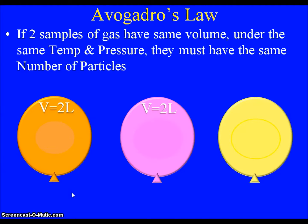The relationship with the number of particles was established by a guy by the name of Avogadro. You'll later recognize a very important number he's associated with: 6.02 times 10 to the 23rd. But going back to gases, Avogadro's law states that if two samples of gas have the same volume under the same conditions — same temperature and pressure — then they must have the same number of particles.